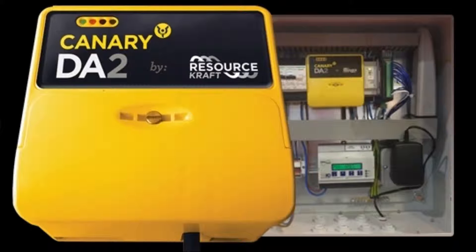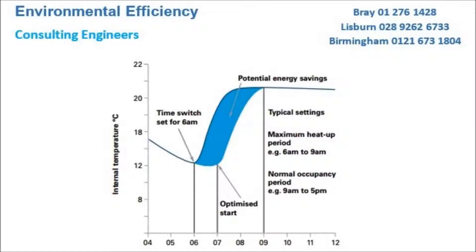Such recommendations would include room thermostats, time clocks, occupancy detectors, weather compensation of heating circuits and data acquisition and control. A good example of improved controls in commercial applications is the installation of optimum start heating controllers. These will vary the start time of the central heating boilers according to the outside weather conditions.